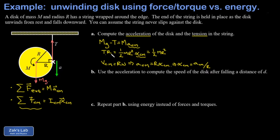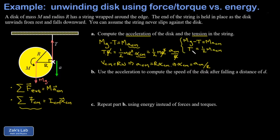Substituting into the torque equation: T·R = (1/2)MR²·(a_cm / R). One factor of R cancels on the right, then we cancel the remaining R from both sides, giving T = (1/2)·M·a_cm. Our system is now: mg − T = M·a_cm and T = (1/2)·M·a_cm. Adding both equations eliminates T, giving mg = (3/2)·M·a_cm. The masses cancel and we arrive at a_cm = 2g/3.